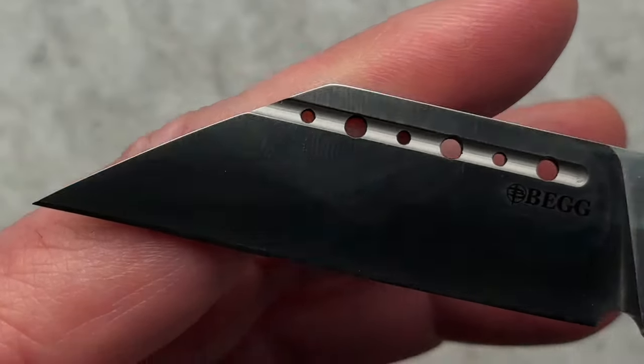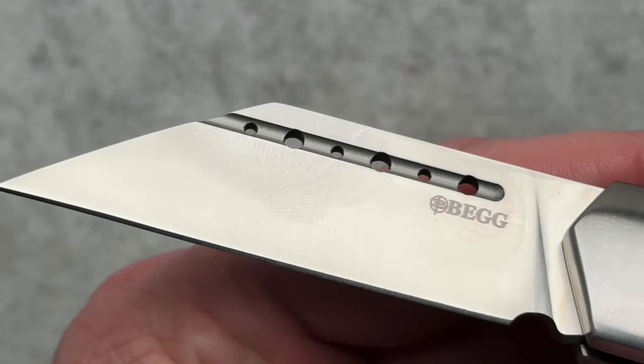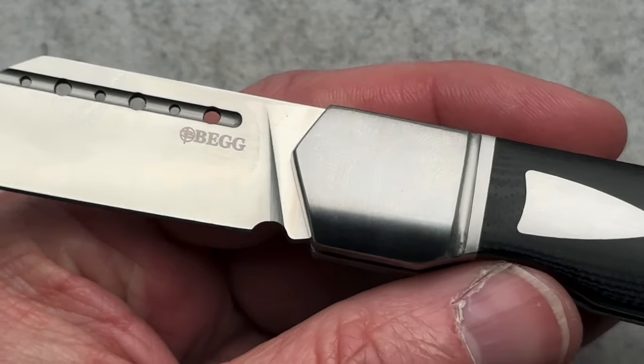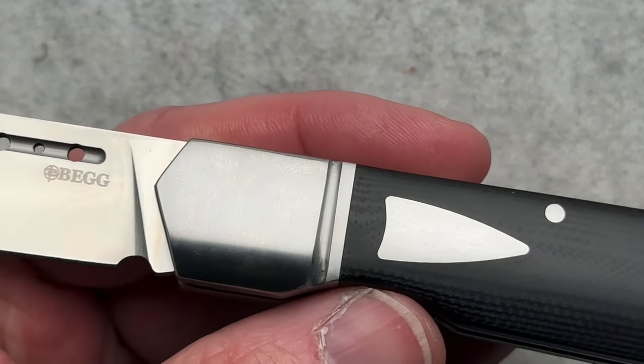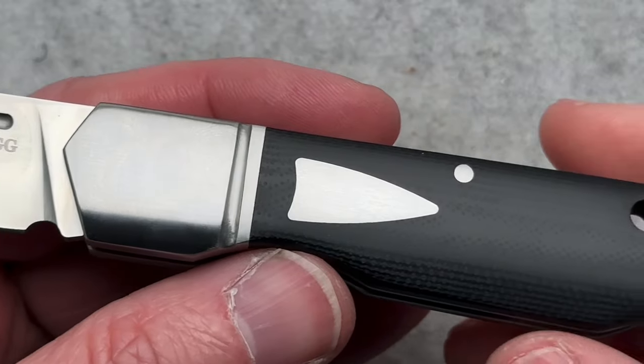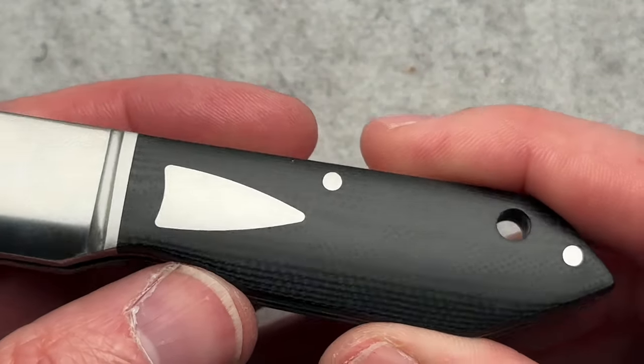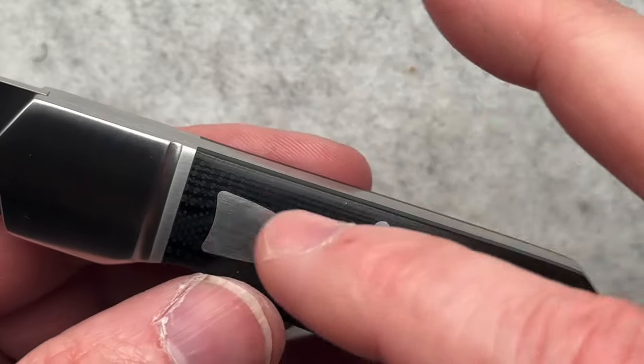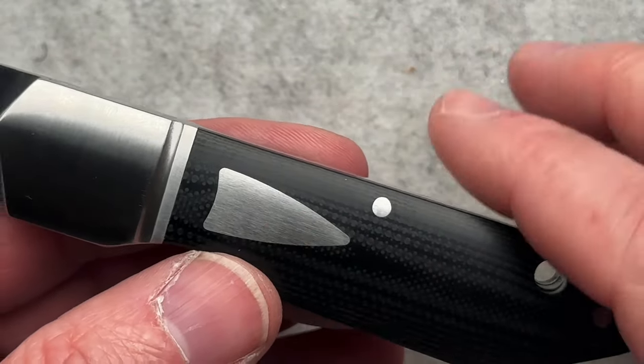This is a JVO design. Jared Van Oter. He has designed a lot of these new slip joints. These are available today. All the ones that I'm going to be showing are available. Black G10. Stainless steel bolsters, pins, all of that.